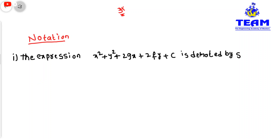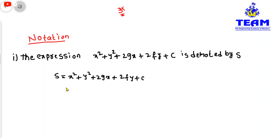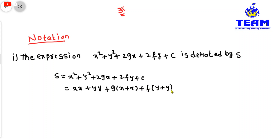The expression x² + y² + 2gx + 2fy + c is denoted by S. So S = x² + y² + 2gx + 2fy + c. For simplification, x² is x·x, y² is y·y, and 2gx is g times (x + x), and 2fy is f times (y + y), plus c. This expanded form is also called S.